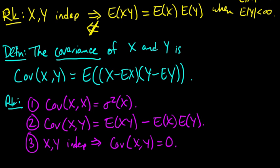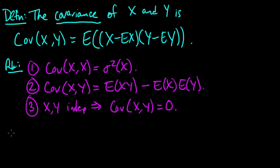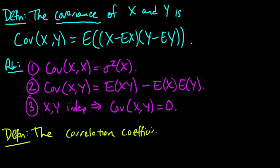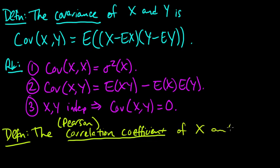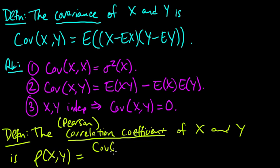One more definition: closely related to the variance, the Pearson correlation coefficient of x and y — because there are many different types of correlation coefficients — is denoted rho of x, y, and it's the covariance divided by the product of the standard deviations. So it's a normalized form of the covariance — you normalize by the standard deviations and you get the correlation coefficient.